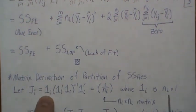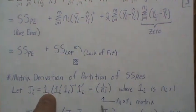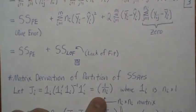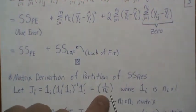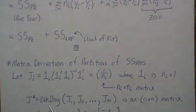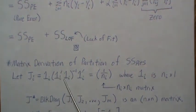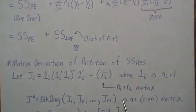Let J_i = (1/n_i) * j_i * j_i^T, where j_i is a vector of ones of length n_i. So J_1 is an n_1 by n_1 matrix of all 1/n_1 entries - it's a constant, symmetric, and idempotent matrix. Then we define J_star as a block diagonal matrix with J_1, J_2, up to J_m along its diagonal. The whole matrix is n by n, since the n_i's sum to n.